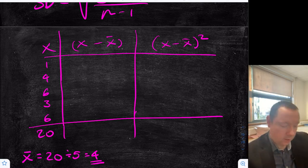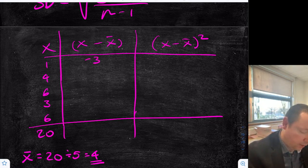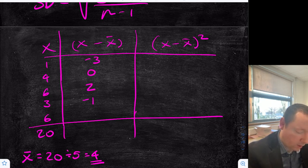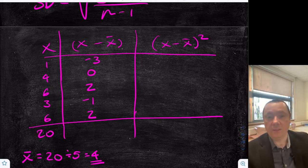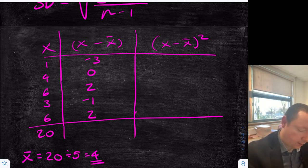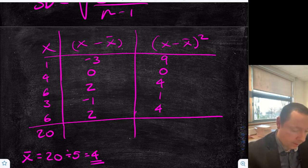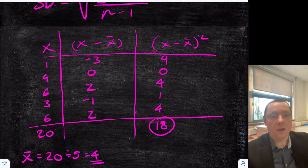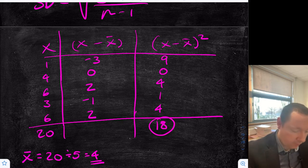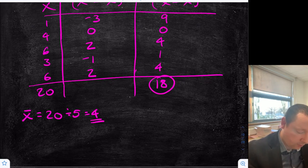In the middle column, we take away the mean: 1 minus 4 is minus 3, 4 minus 4 is 0, 6 minus 4 is 2, 3 minus 4 is minus 1, 6 minus 4 is 2 again. The last column is squared: 3×3 is 9, 0×0 is 0, 2×2 is 4, 1×1 is 1, 2×2 is 4. Adding them up: 9, 13, 14, 18. Our key number is 18. So standard deviation equals the square root of 18 over 4.